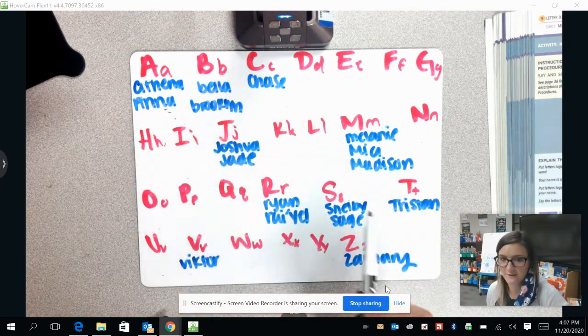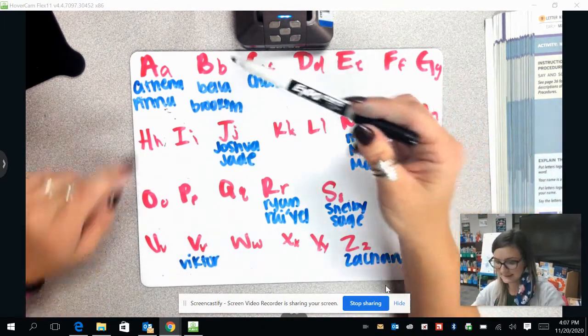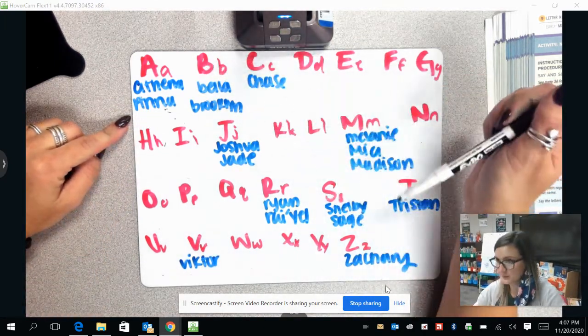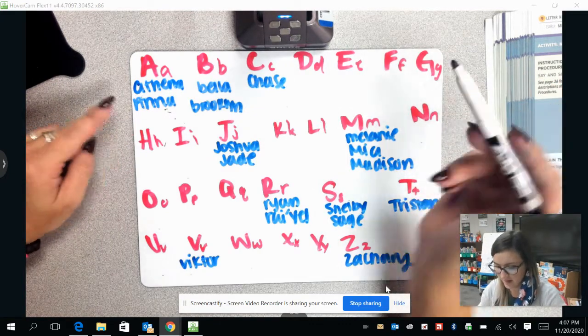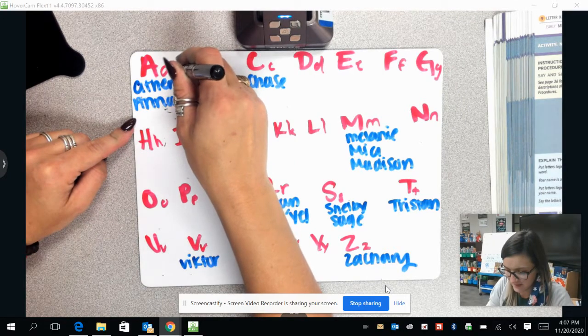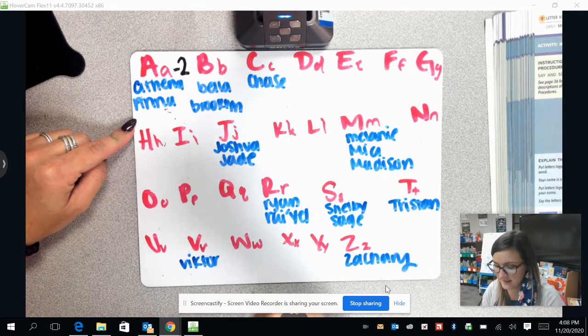Ms. Dodd has written the whole alphabet, upper and lowercase, and we can see whose names go under each alphabet letter, and we can count how many there are. Under the letter A, we have Athena and Anna. That is two people in our class that start with the letter A.